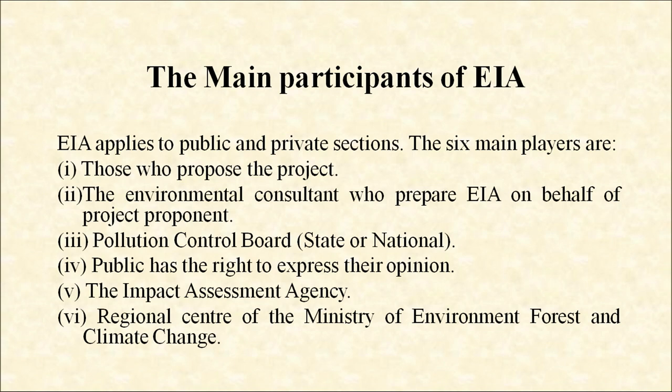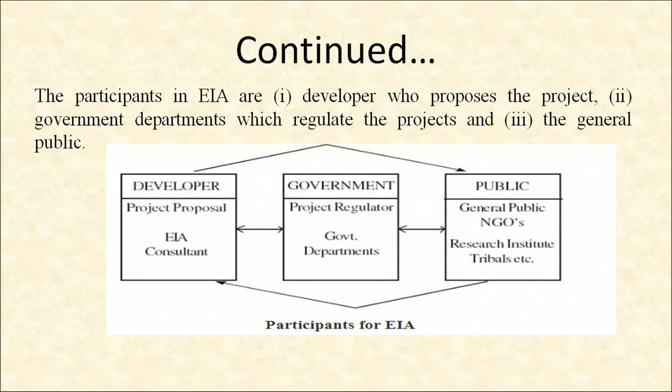Now, the main participants of EIA. EIA applies to public and private sectors. The six main players are: first, those who propose the project; second, the environmental consultant who prepares EIA on behalf of the project proponent; third, the pollution control board, either state or national; fourth, the public, which has the right to express their opinion; fifth, the impact assessment agency; and sixth, the regional center of the Ministry of Environment, Forest and Climate Change. The participants in EIA are the developer who proposes the project, the government department which regulates the project, and the general public.